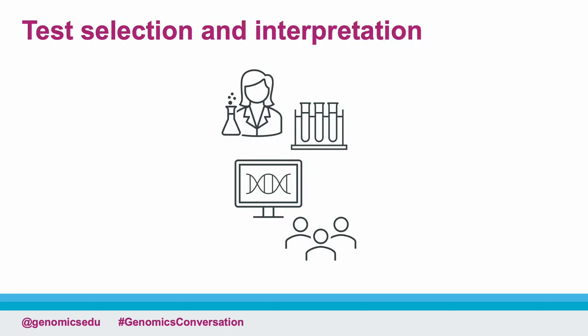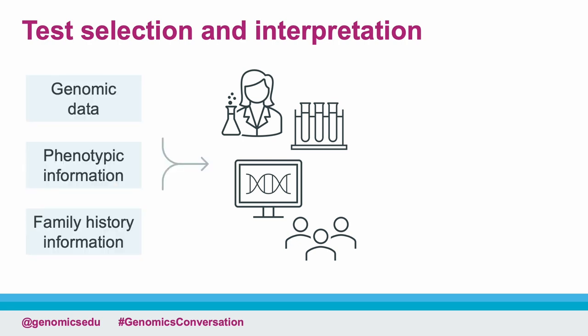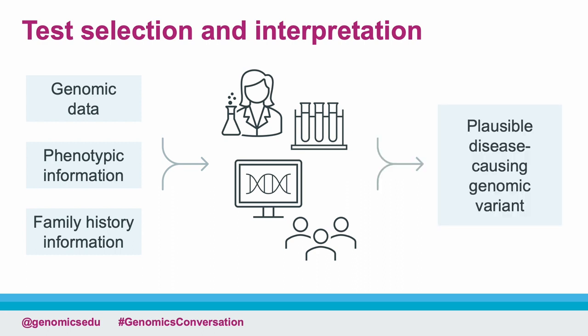Another reason for using HPO terms is that phenotypic information is used by scientists and technicians in the laboratory to determine whether the correct test has been selected. Phenotypic information combined with genomic data and information about the family history also informs interpretation of results. In genomic testing, even one small gene panel can highlight thousands of genomic variants for analysis, and the phenotypic information provided by the clinician is one of those crucial pieces of information used to analyse those variants.